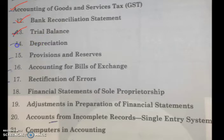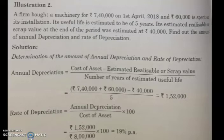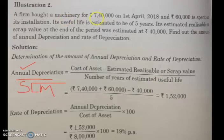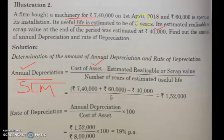Then we discussed depreciation. In the SLM — straight line method — the formula to calculate annual depreciation is: cost of asset minus estimated scrap value divided by the number of years of useful life of that machinery. The cost and scrap value will be given in the question. Dividing those you will get the annual depreciation.